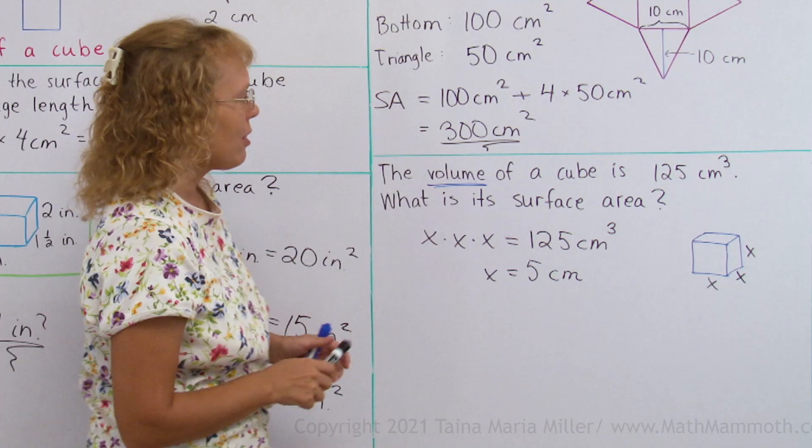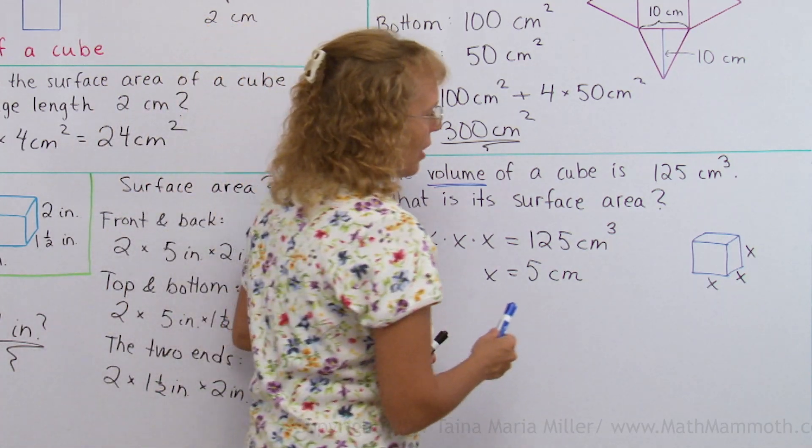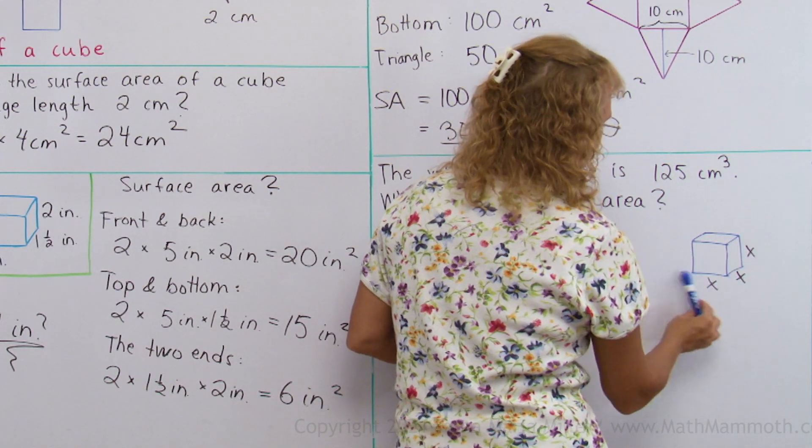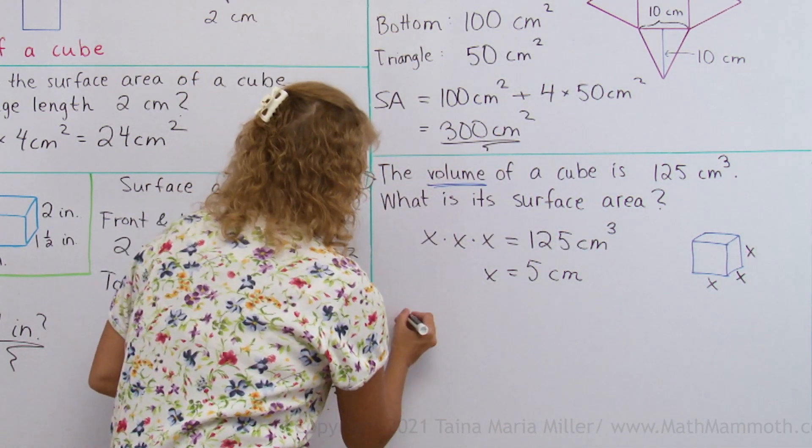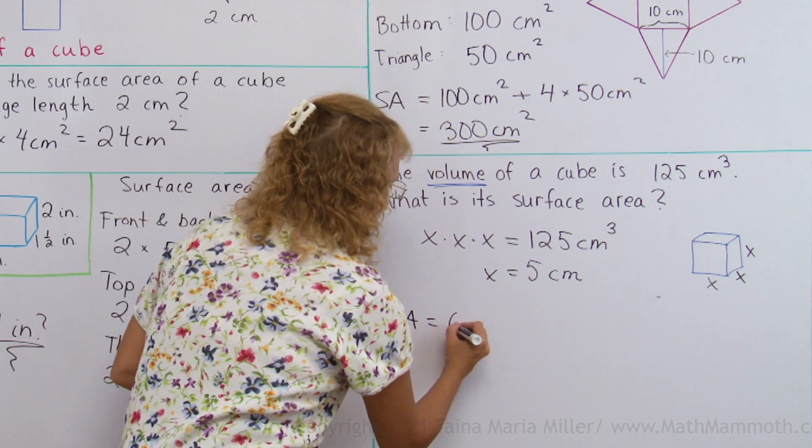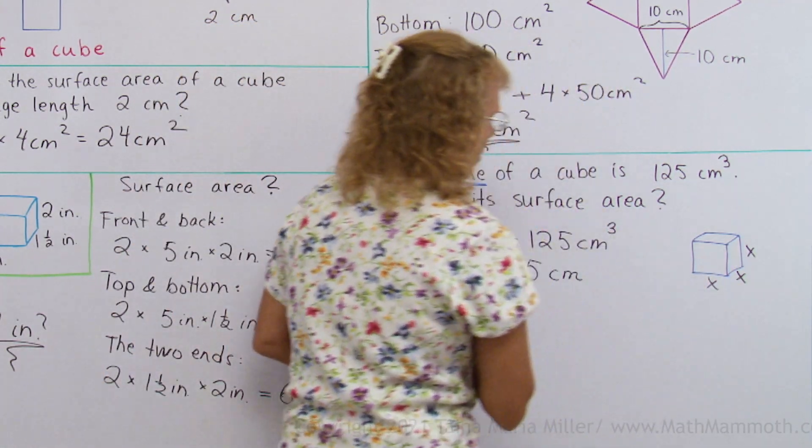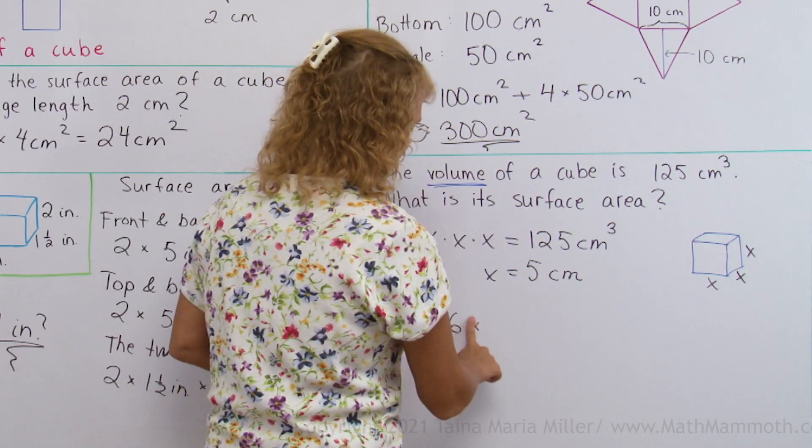And now we can figure out the surface area. Again for cube, I actually have 6 identical faces here, right? So the surface area will be 6 times the area of one of those faces.